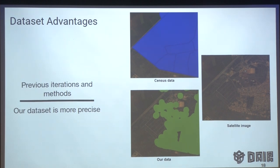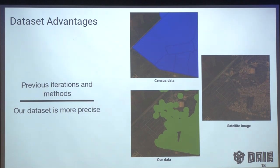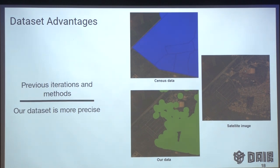An advantage of our dataset over the government data is that with the government's data, it's really difficult for a model — or anyone — to identify a patch as a township. With our dataset, we are able to characterize townships, suburbs, or any neighborhood type by the presence of buildings, and then build models accordingly. We also explored grouping 12 classes into four broader classes: wealthy neighborhoods (suburbs, small holdings), non-wealthy neighborhoods (informal settlements, townships), non-residential areas (commercial, industrial), and so on — dividing by cost of real estate. Labels like this created models that generalized better.